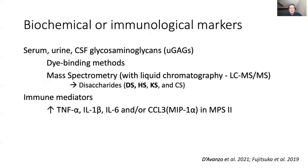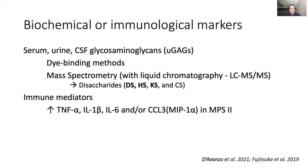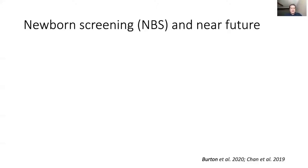Another possibility is to look at immune mediators, like different immunological markers that are usually pro-inflammatory. We know there is brain inflammation going on in the MPS brains, so we can measure that. But again, this is more useful for comparing groups, not for individual decision-making processes.